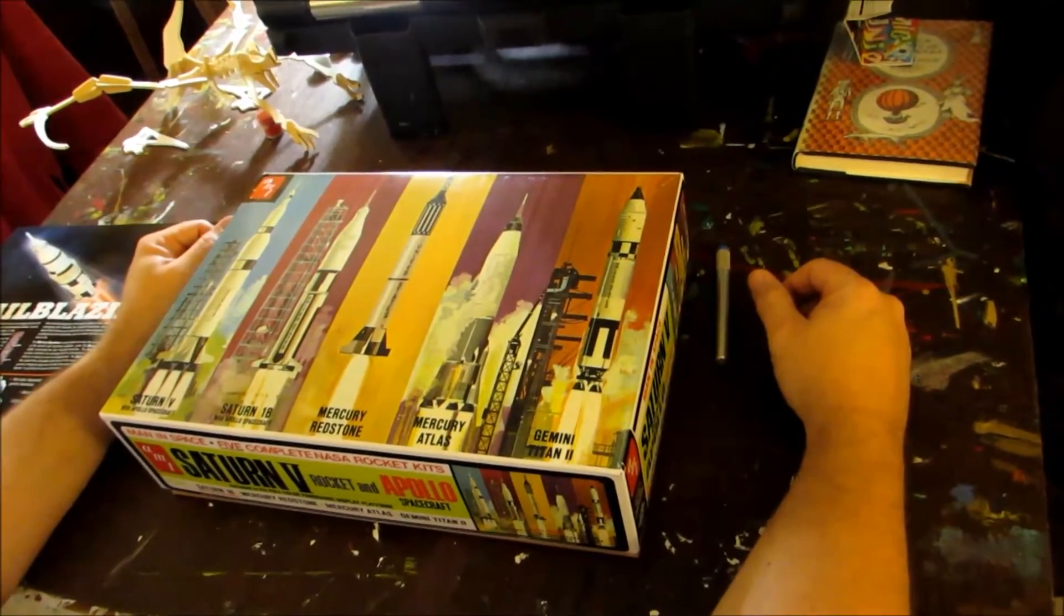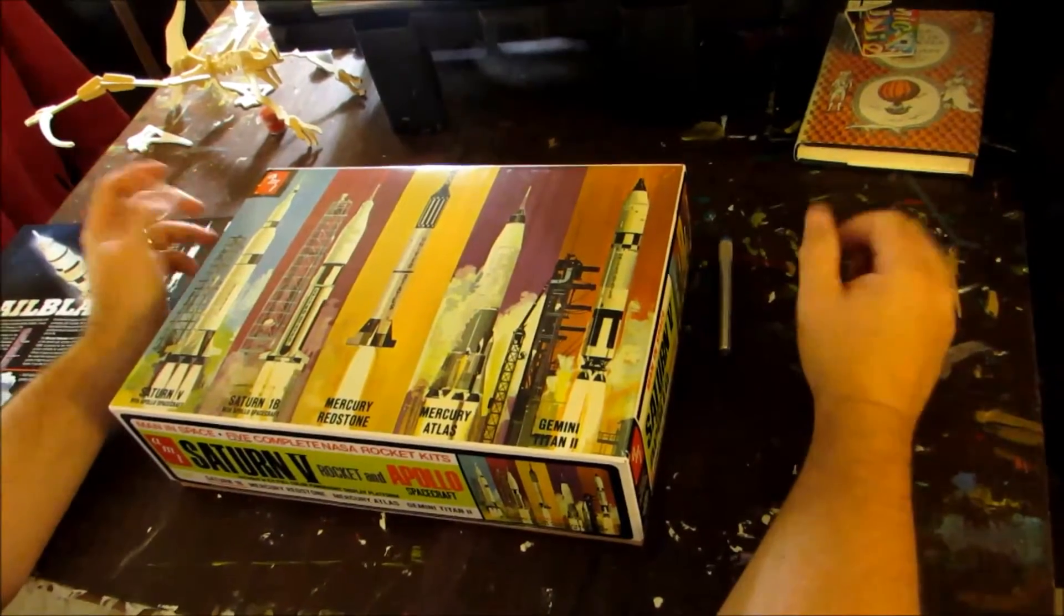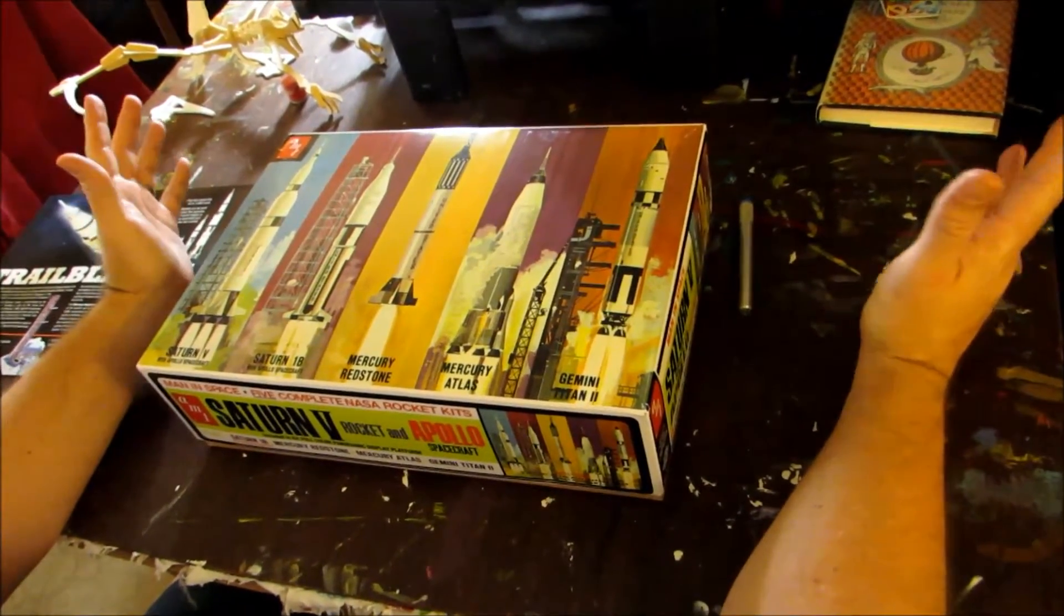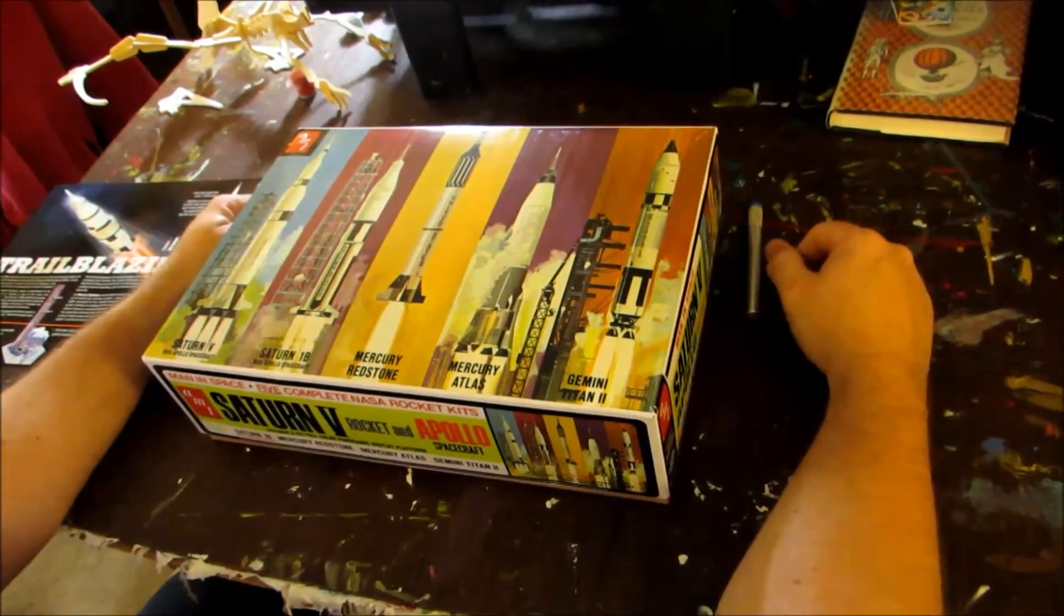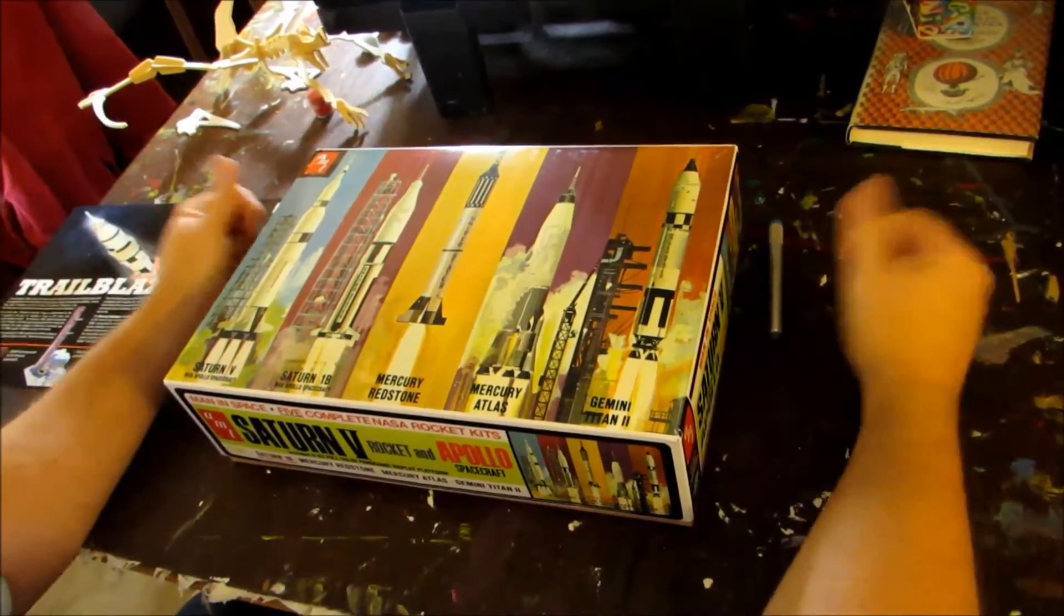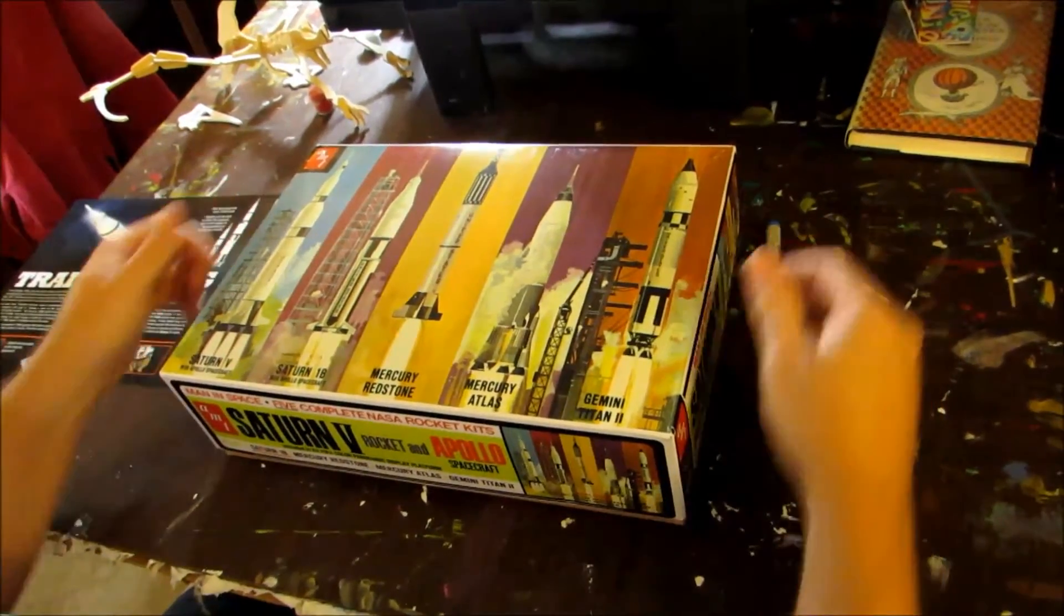The kit produced by Round 2 is a 5 rocket set. It's got the Saturn V, the Saturn IB, Mercury Redstone, Mercury Atlas, and Gemini Titan. For those of you that are history inclined, these are the missiles that sent the United States into space.